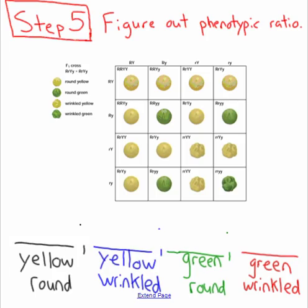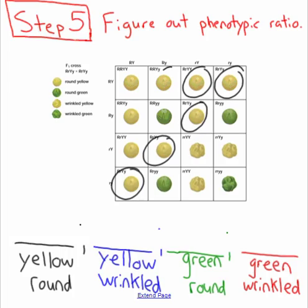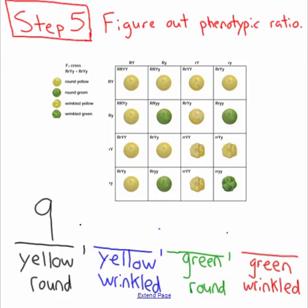There are four different phenotype combinations from this dihybrid cross: a seed could be yellow round, yellow wrinkled, green round, or green wrinkled. We'll start with yellow round — going through and counting any boxes that have big R and a big Y. Counting them up: one, two, three, four, five, six, seven, eight, nine. There are nine yellow round seeds from this dihybrid cross.